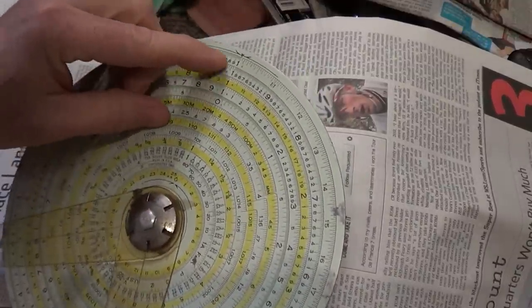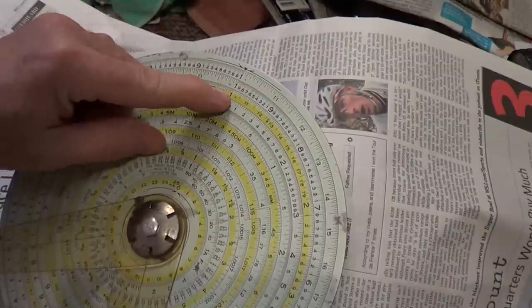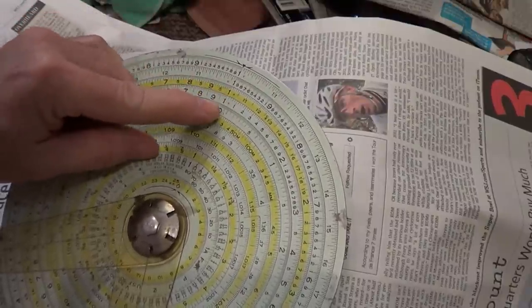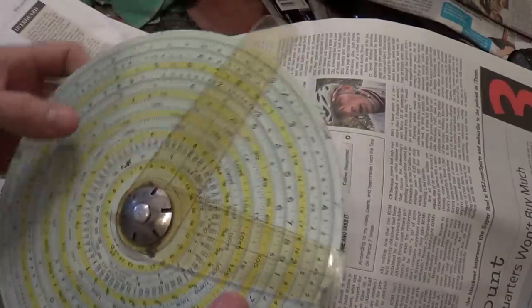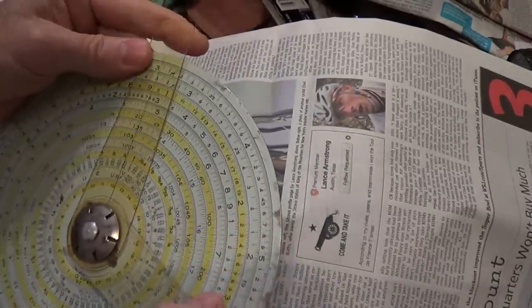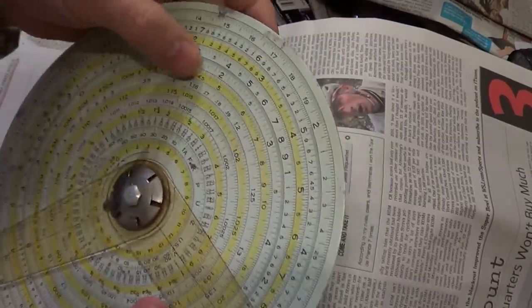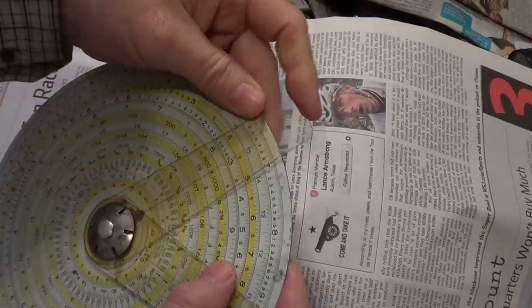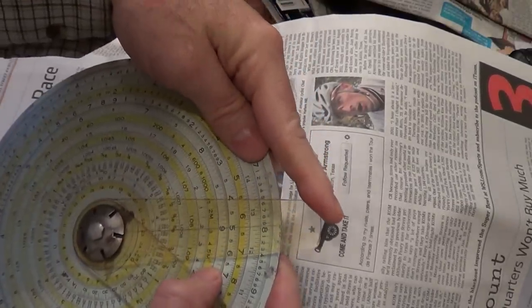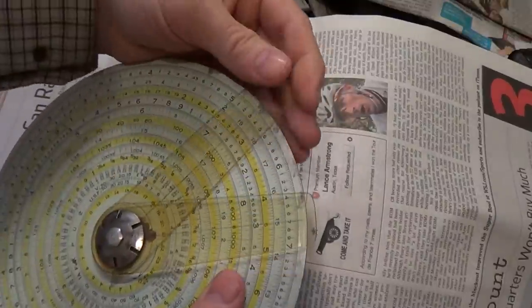Then you have another scale over here. You've got the C scale, the CI which is inverted, the A scale is for squaring, the K is for cubing. If you go over here and look at the K scale, they've got these different colors so you don't get too confused. There's three.